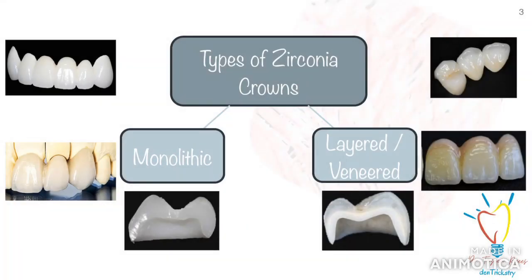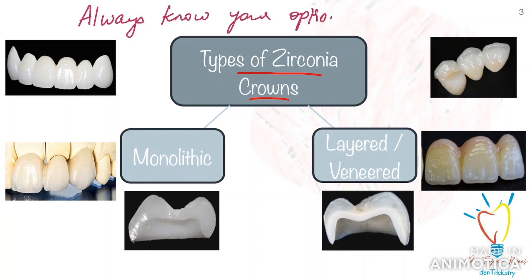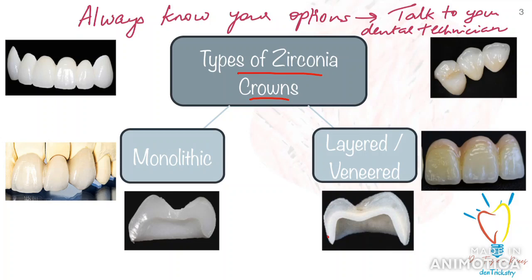You should know that there are different types of zirconia crowns, so talk to your dental technician and see what types are available with them. It is necessary that we know the difference because each type has a different set of indications. One is monolithic or solid zirconia, and then we have the veneered or layered restorations — crowns which have an inner zirconia coping and a porcelain layer on top.